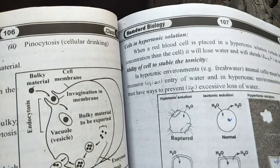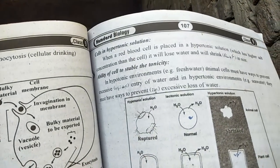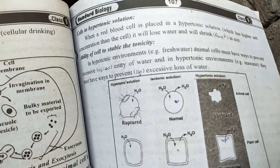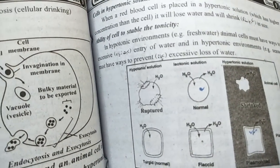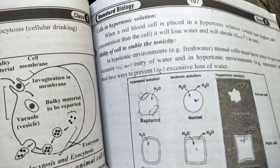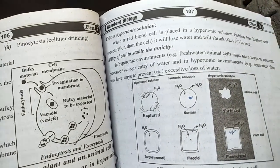Cells in hypertonic solutions: When a red blood cell is placed in a hypertonic solution which has higher salt concentration than the cell, it will lose water and will shrink in size.